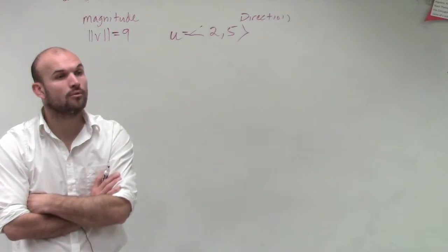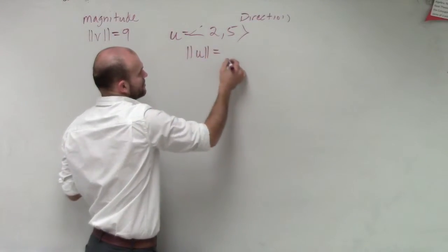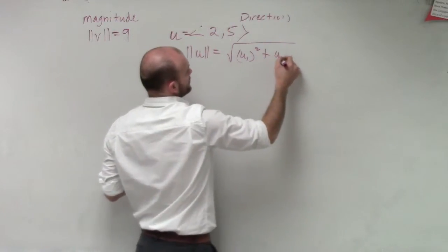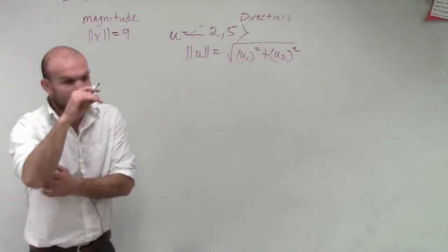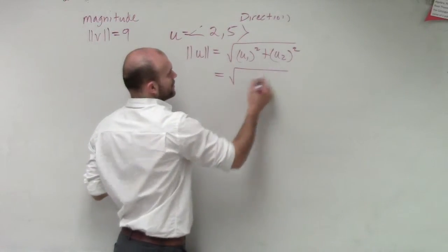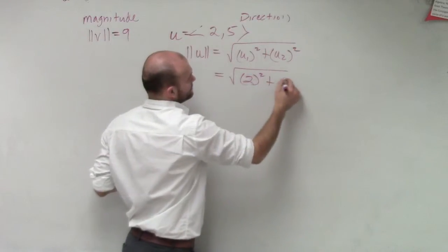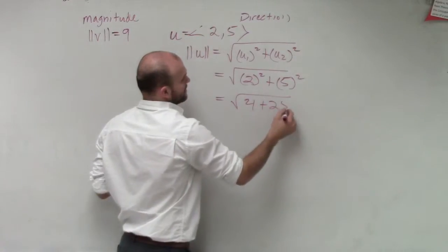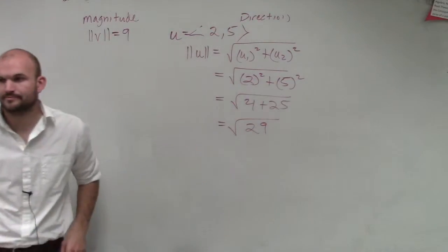So let's look at the magnitude of u. Remember, the magnitude of u is going to be √(u₁² + u₂²). I don't need a note card for this. Hopefully you guys do enough practice and you'll get it. Therefore, ||u|| is going to be √(2² + 5²) = √(4 + 25) = √29, which we cannot reduce.